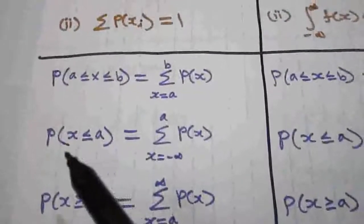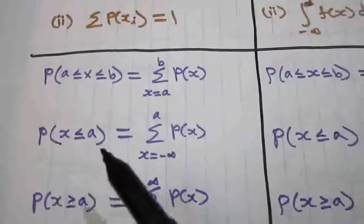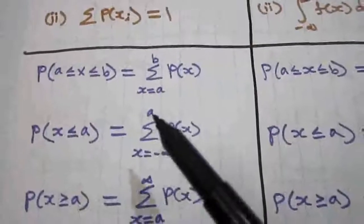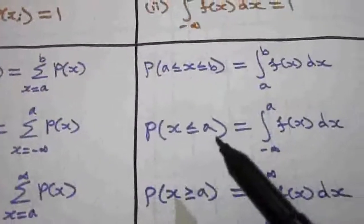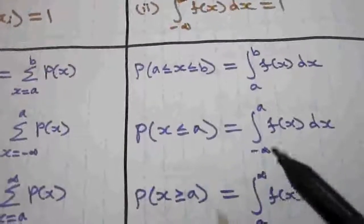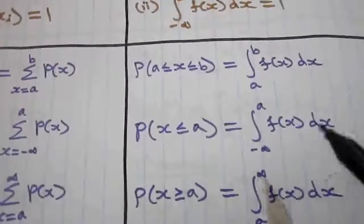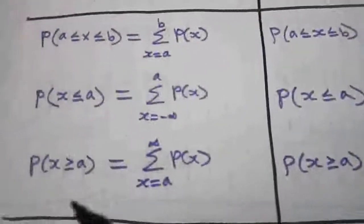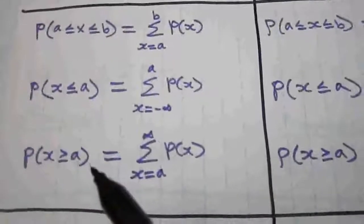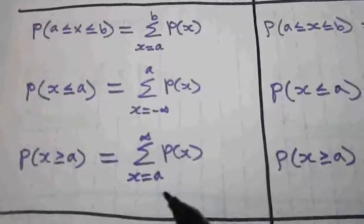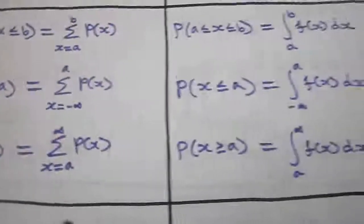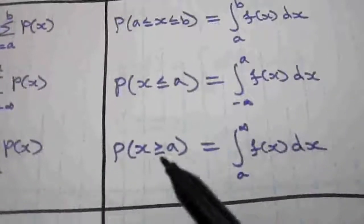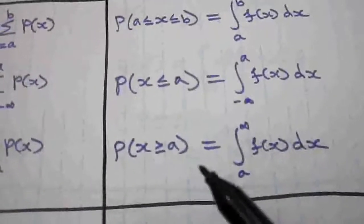P(x < a) for the discrete random variable is the summation from minus infinity to a of p(x). And P(x ≤ a) for the continuous random variable is the integral from minus infinity to a of f(x) dx. If P(x > a), for discrete it is the summation from a to infinity of p(x), and for continuous it is the integral from a to infinity of f(x) dx.